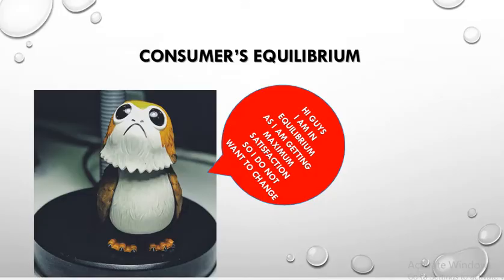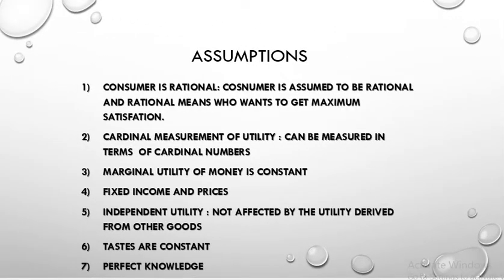What are the assumptions of consumer equilibrium? First, the consumer is rational — he always compares the marginal utility of one commodity with the marginal utility of another, and his objective is to get maximum satisfaction. We assume cardinal measurement of utility, meaning the utility derived from consumption can be measured in cardinal numbers like 1, 2, 3. Marginal utility of money remains constant. There is fixed income and fixed prices. There is no change in taste, habits, and fashion. There is independent utility — the utility derived from commodity X is not influenced by the utility derived from commodity Y. Tastes are constant and the consumer has perfect knowledge of different commodities and their prices.